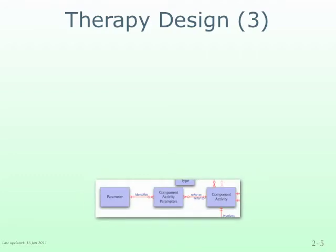The next group includes the parameter and component activity parameter data objects, which represent two of the three ways that a therapy program designer can customize or modify the way a therapy program operates. The way this works is that the functional components of one or more therapy programs can be designed to reference one or more of these parameter data objects to modify the way they work — for example, to temporarily insert a survey activity into one or more therapy programs.